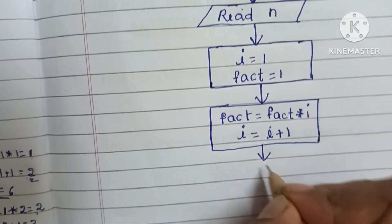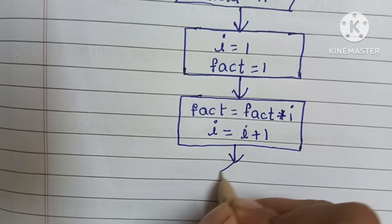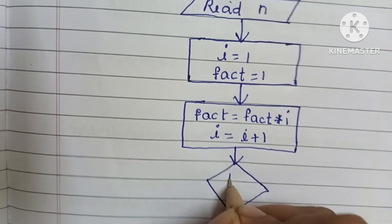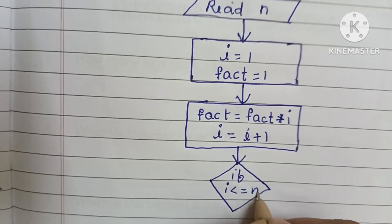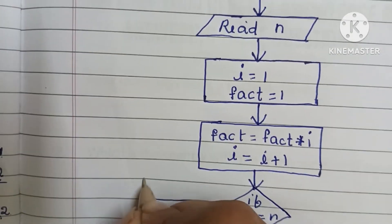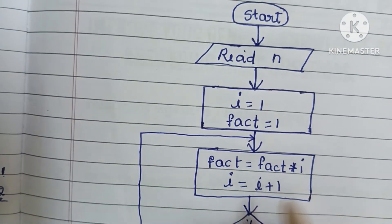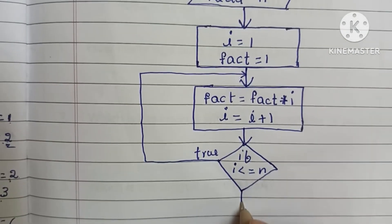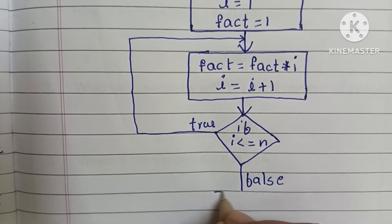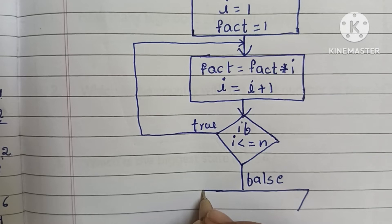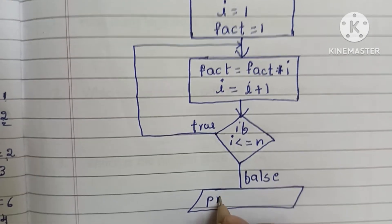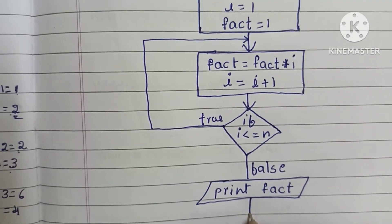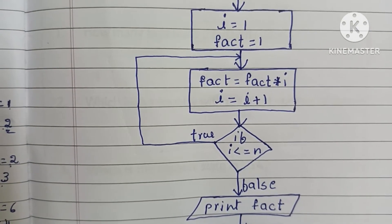Next we have to check — comparison is done within a diamond shape. If i value is less than or equal to n and this condition is true, we go back to the calculation process. If this condition is false, we print the output. Output values are written within a parallelogram shape — here we print the fact value. Next we stop the flowchart using the stop statement.